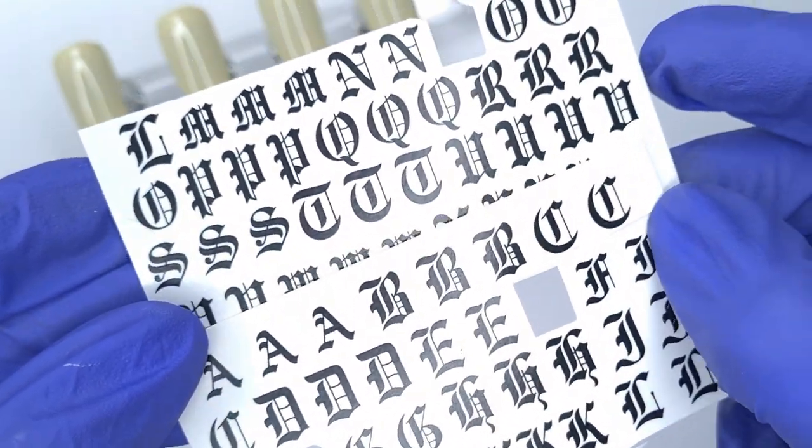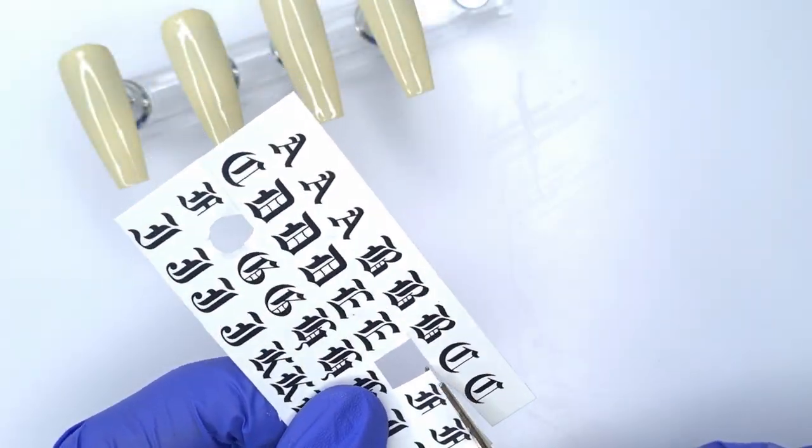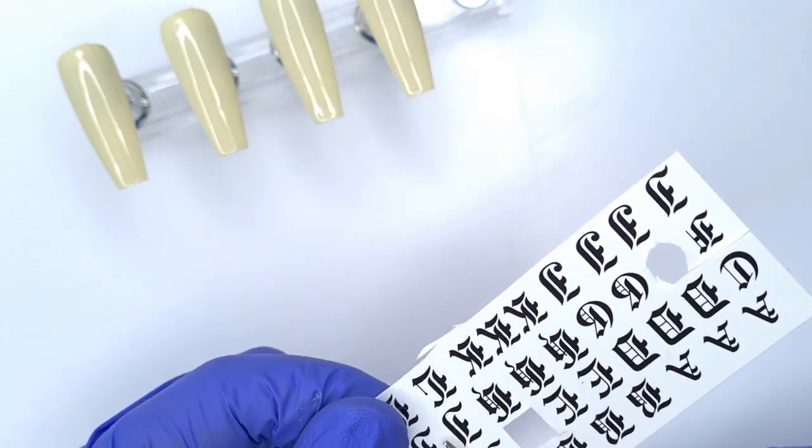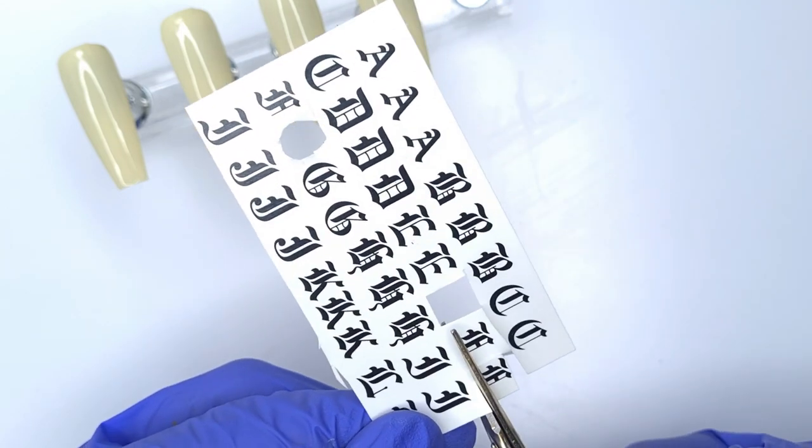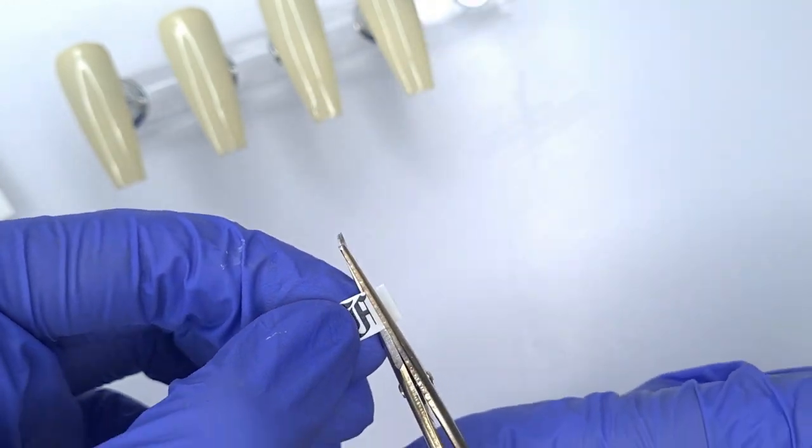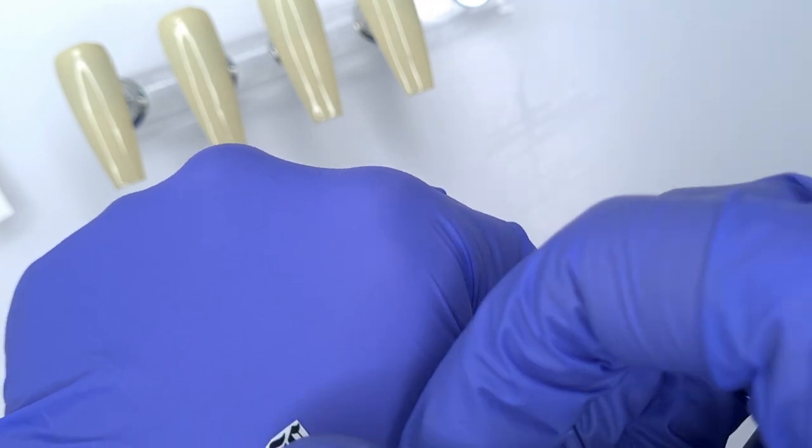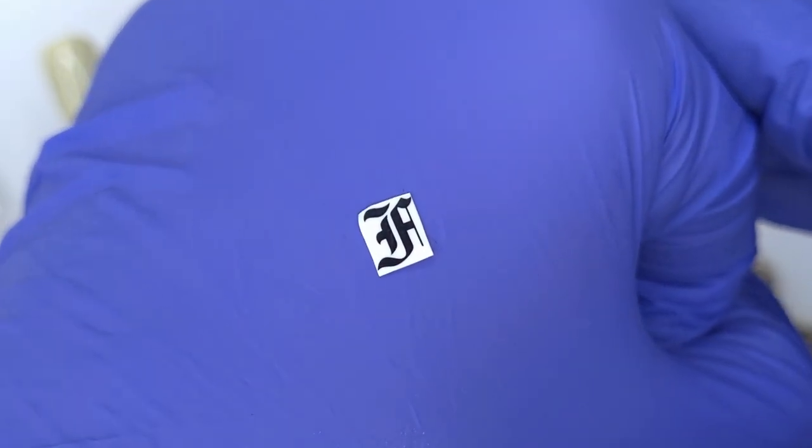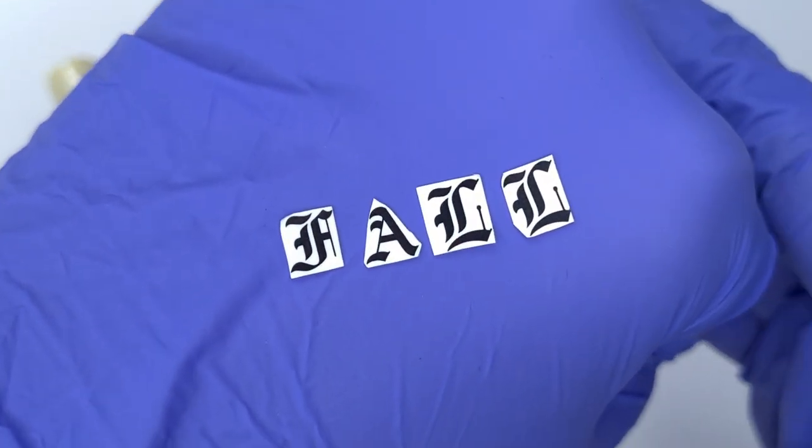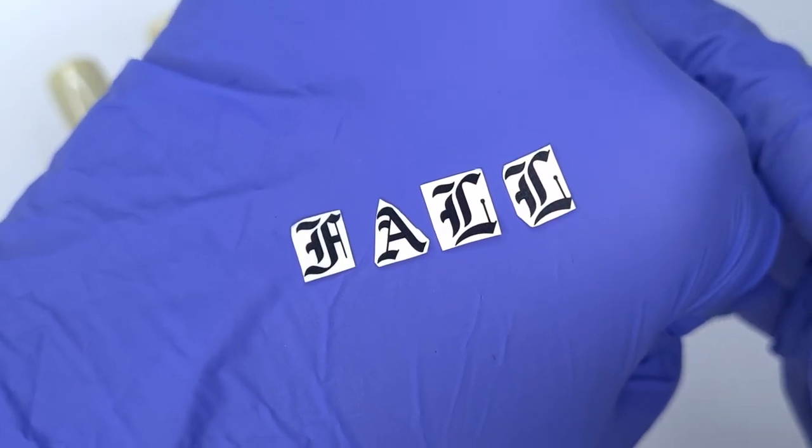So for my water decals I'm going to be using these old English style letters from Miss Lucy's. Now I will leave a link to all the products in the description box below and I highly recommend checking out Miss Lucy for water decals. She has a really amazing Christmas collection on her site at the moment. So I've cut the water decal out as close to the image as possible and I've did this for all four of the letters I'm going to be using so that we can spell out fall.